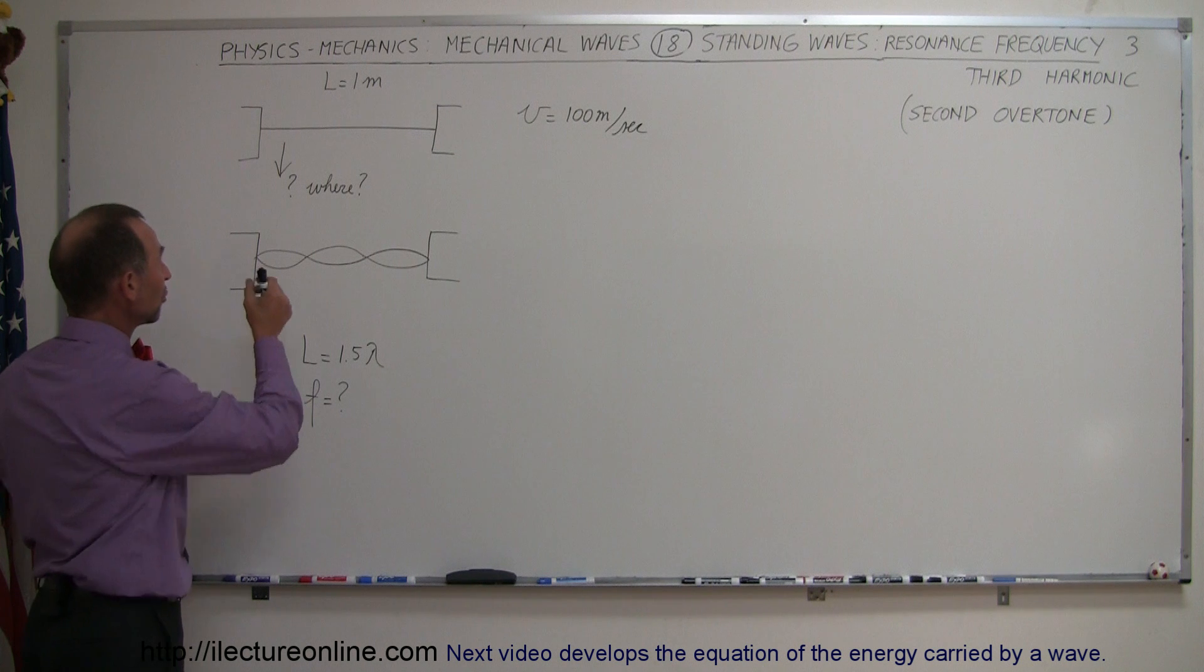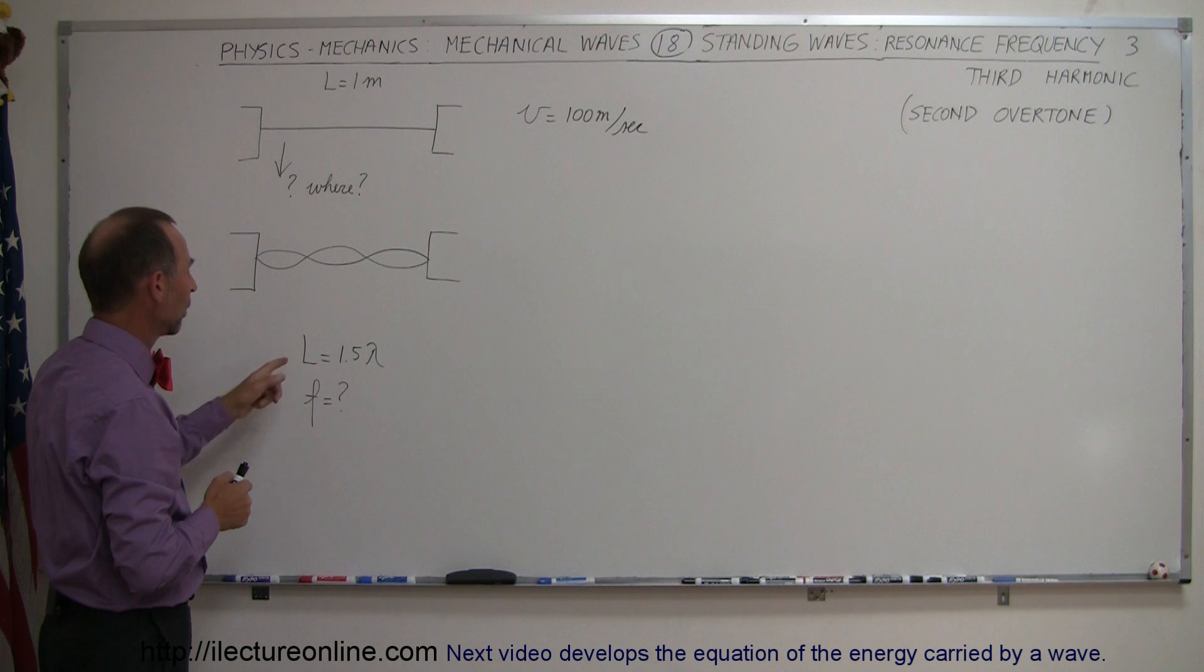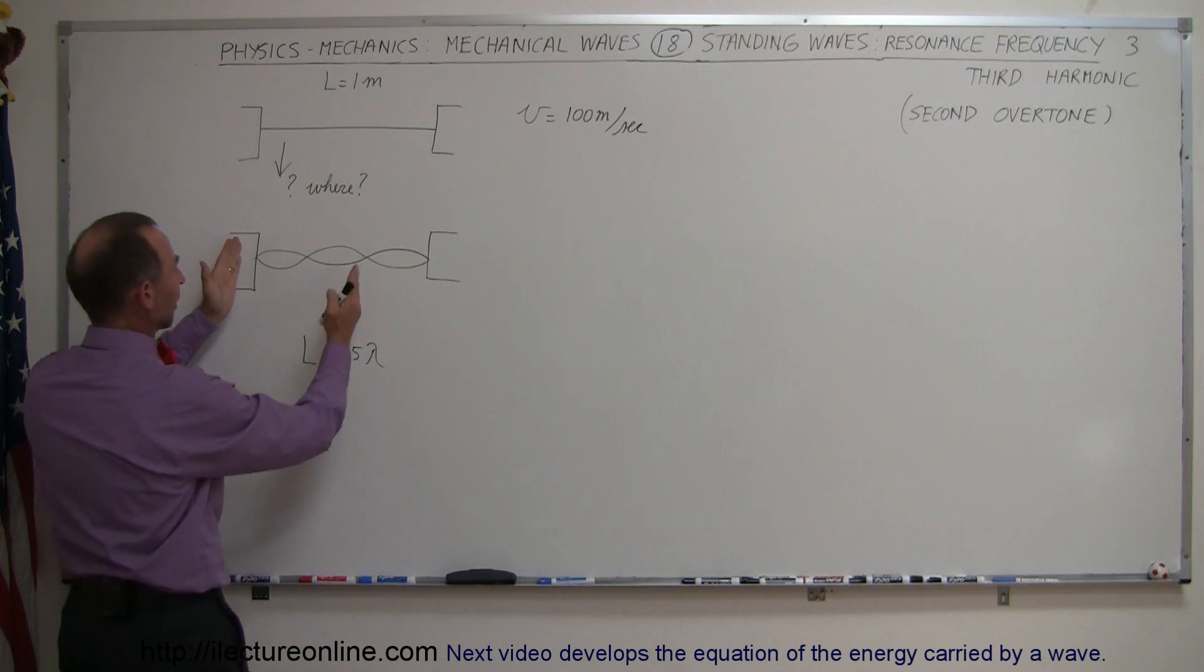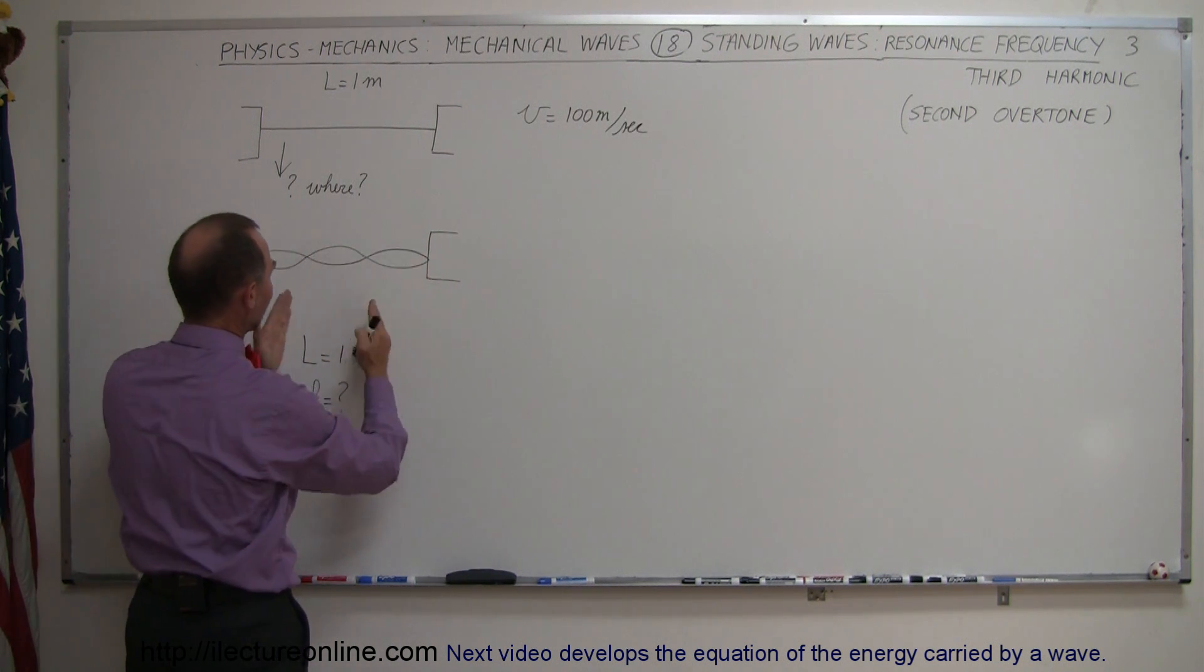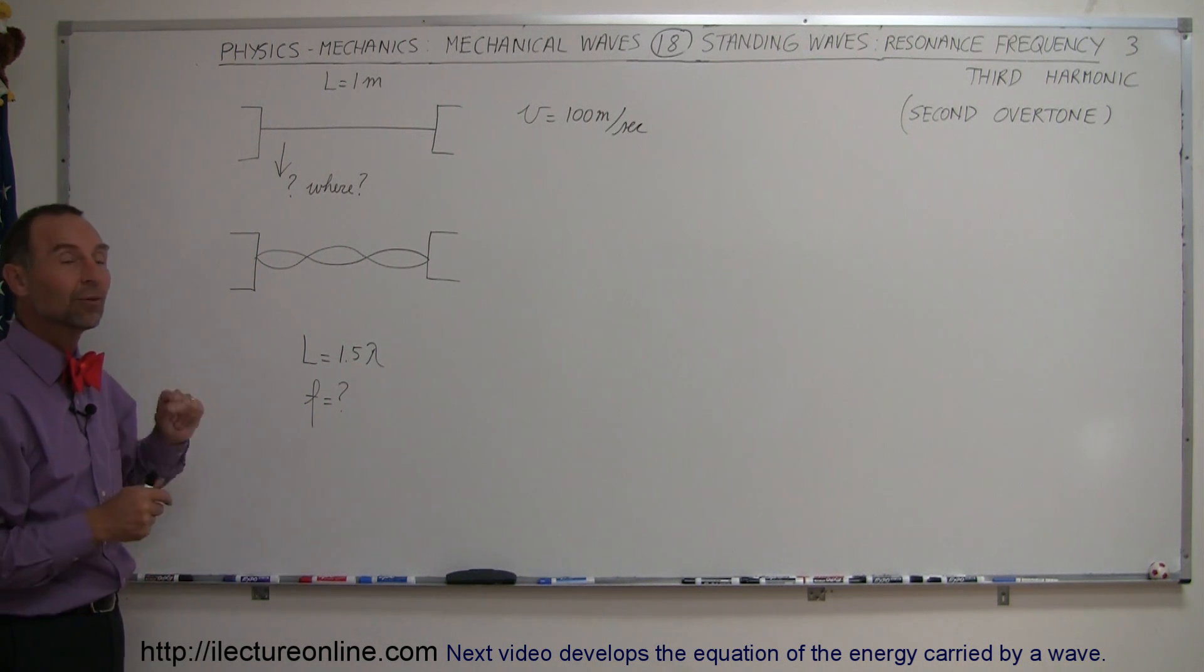The question now is, where should we pluck the string? Where should we pull down on the string so we get a wave pattern that looks like this, where the length is equal to one and a half wavelengths? Notice that's a full wavelength, that's a half, so the length of the string is now one and a half wavelengths. And what's the associated frequency?